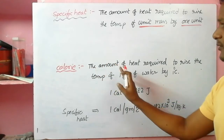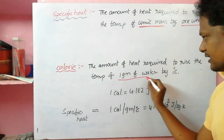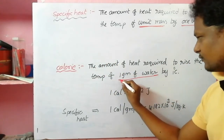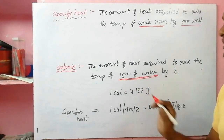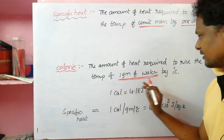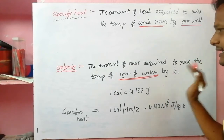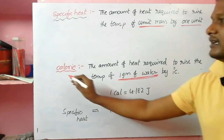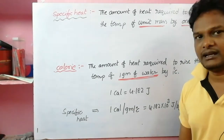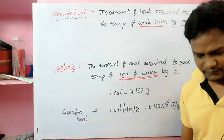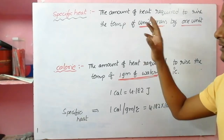Calorie: the same concept but specific to water. The amount of heat required to raise the temperature of one gram of water by one degree is called one calorie. So one calorie is defined only for water — one gram of water, one degree temperature rise.